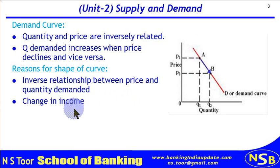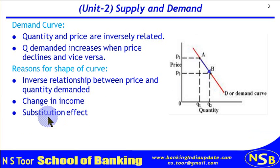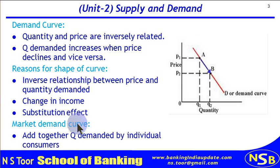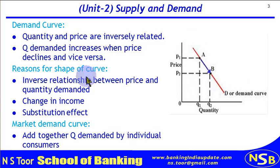Second, there can be a change in income. Whenever there is a change in income, again the demand will increase. Then the substitution effect comes into picture when there are substitute goods. The price of one commodity leads to a change in demand of another commodity if those goods are related — like car and petrol. If price of car increases, demand for petrol will decrease. The market demand curve is formed when we add together the quantity demanded by individual consumers; when individual quantities demanded are aggregated, it becomes the market demand curve.